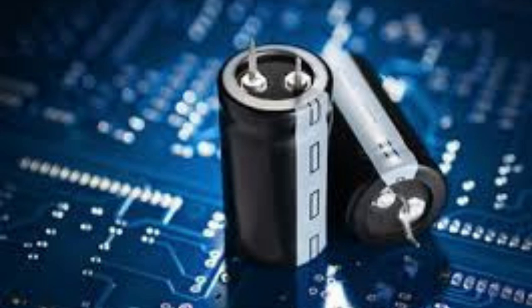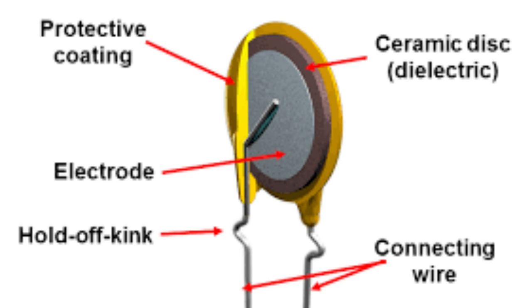Ceramic capacitors are available in several different shapes and sizes, including disc, plate, and cylindrical shapes. They can also be constructed in several different ways, including monolithic construction, multi-layer construction, and metal plate construction. Ceramic capacitors are characterized by their small size, high stability, and low cost. They have a high capacitance to volume ratio, making them suitable for use in small, high density circuits, and a low equivalent series resistance (ESR), which helps to reduce losses in high frequency circuits.